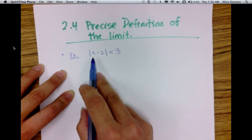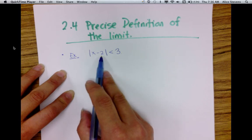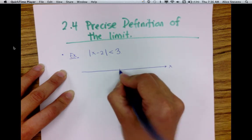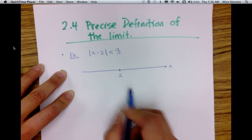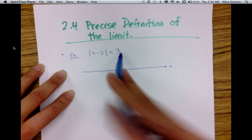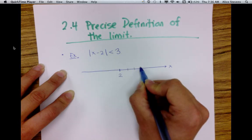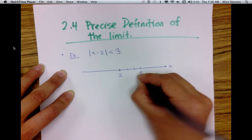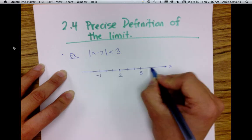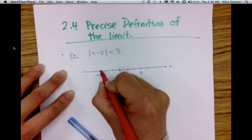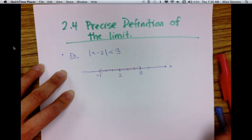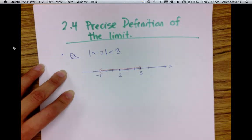This expression means that the distance from x to 2 is less than 3. If I were to graph this, I would start at 2 and look for all values of x such that the distance from x to 2 is less than 3. That is essentially this set of numbers right here, not including negative 1 and 5. You can also solve this algebraically and get the same graph.